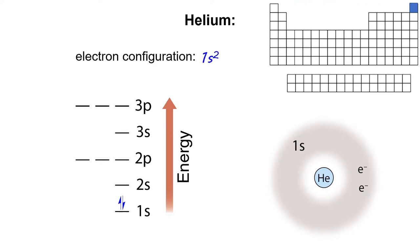The electron configuration of helium is 1s². There are two electrons in the 1s subshell. This means helium has a full first energy level, which gives it extra chemical stability.